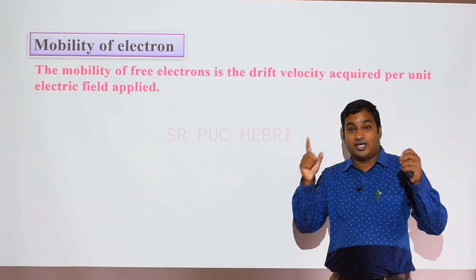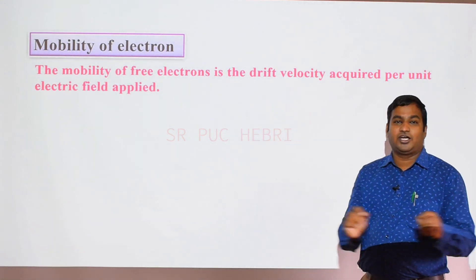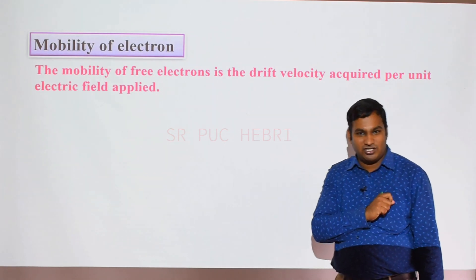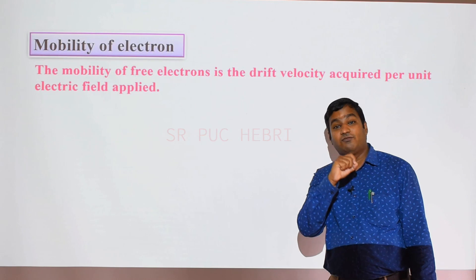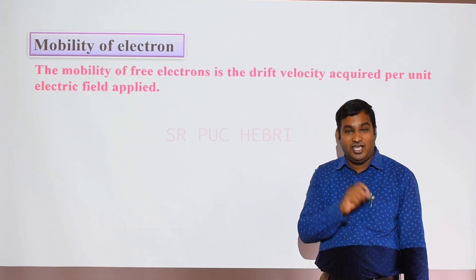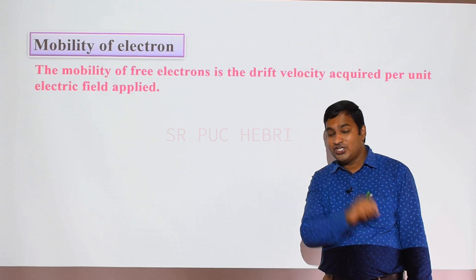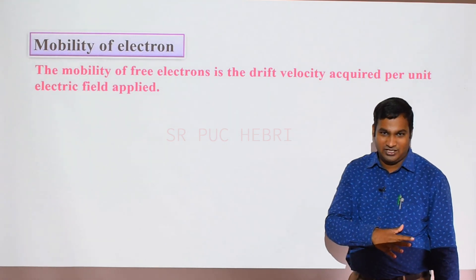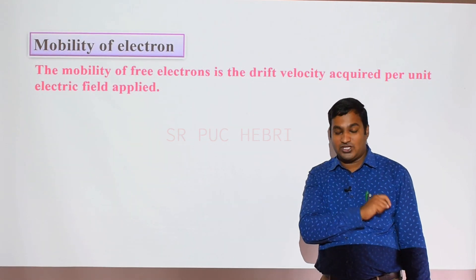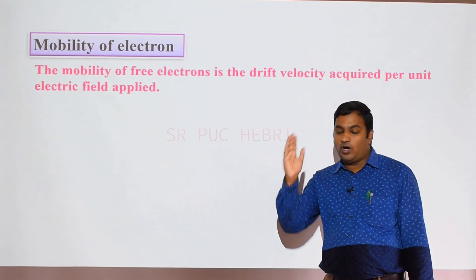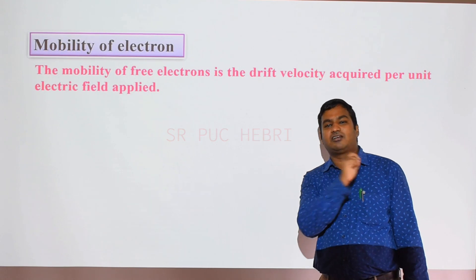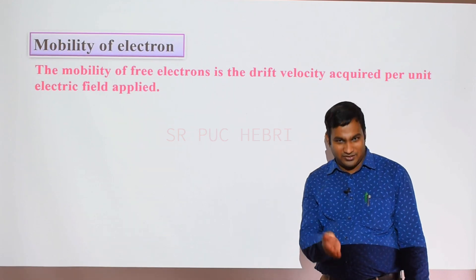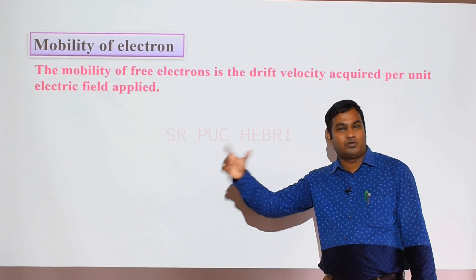To get electric current, you have to connect a battery across the conductor. When you connect the battery, a potential is applied and an electric field is generated across the conductor. Due to that electric field, each free electron experiences a Coulomb's force acting opposite to the direction of the electric field, because electrons are negatively charged. Electrons then drift from one end to another, creating a net transfer of charge and thus electric current.